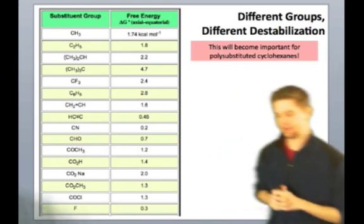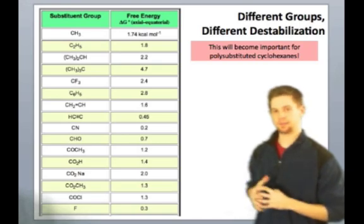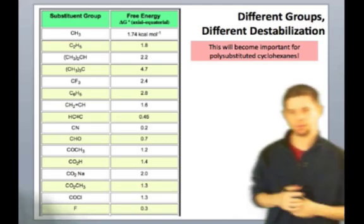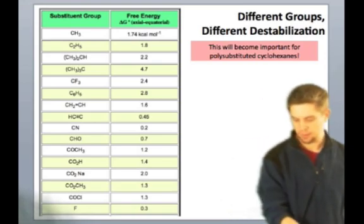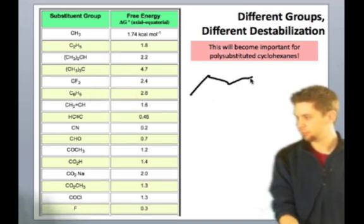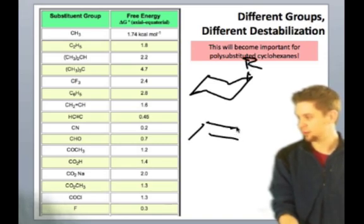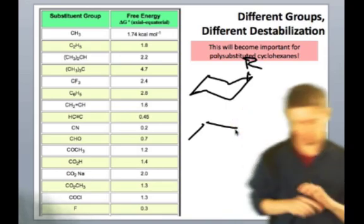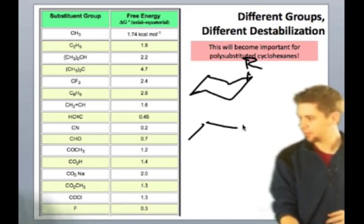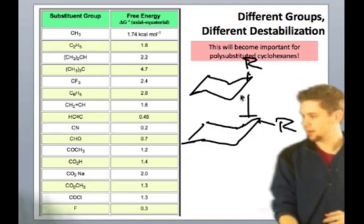Here's a table that illustrates the interesting idea that different substituents have different destabilizations of their axial conformer relative to their equatorial. What you're looking at here are numbers that will illustrate the difference in energy between the axial and equatorial conformer. So here's an axial conformer. We would expect that to be higher in energy than the equatorial conformer, shown there. And that difference in energy is what's listed here.